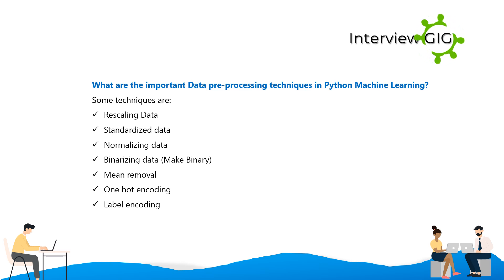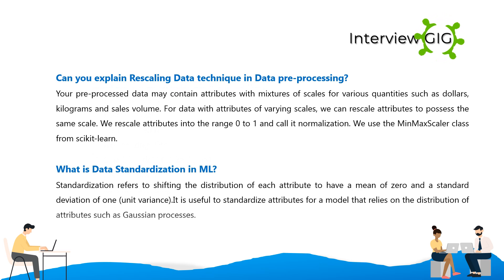Can you explain the rescaling data technique? Pre-processed data may contain attributes with mixtures of scales for various quantities such as dollars, kilograms, and sales volume. For data with attributes of varying scales, we can rescale attributes to possess the same scale — into the range 0 to 1. We use the MinMaxScaler class from scikit-learn for this.